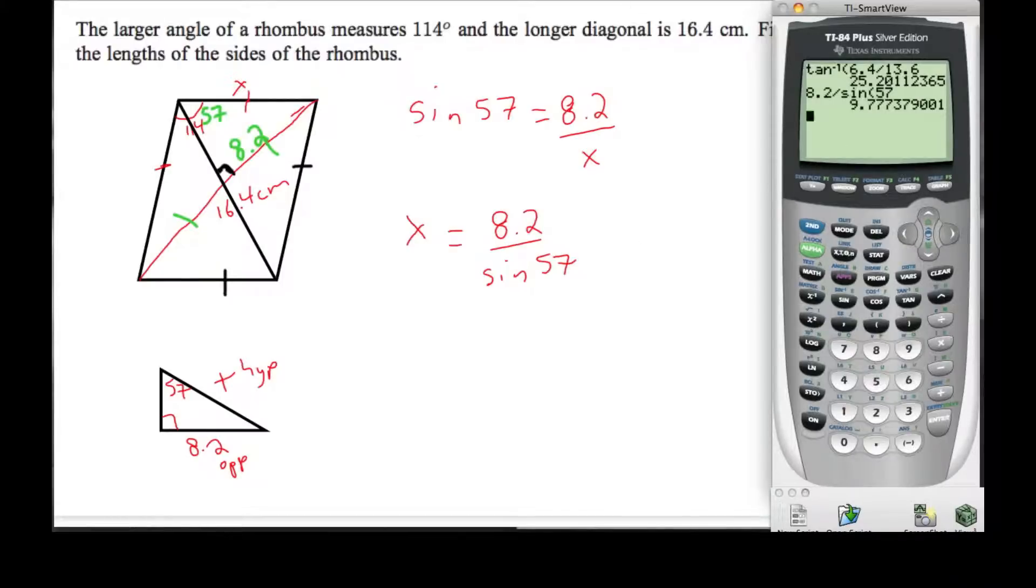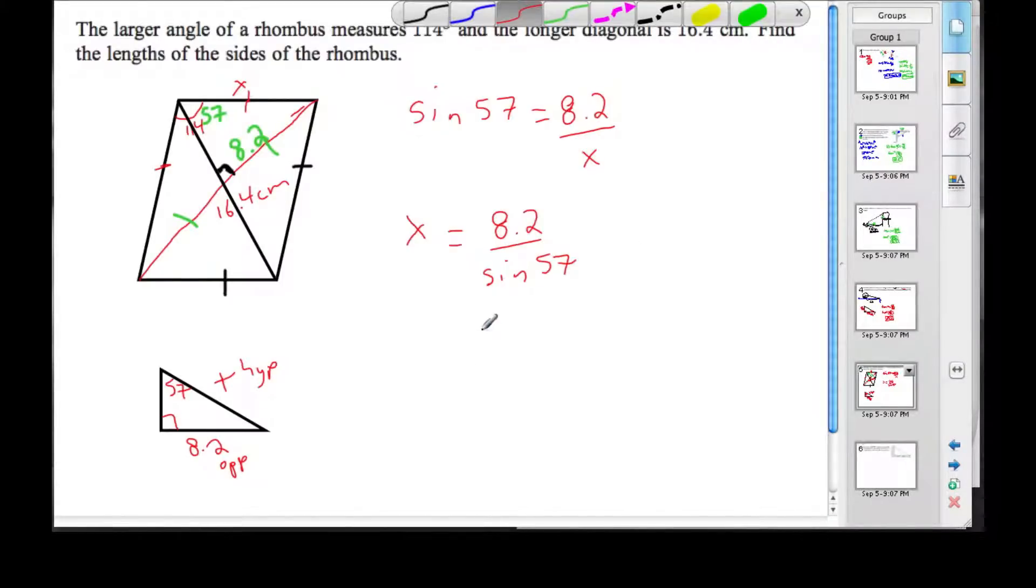Rounded to three significant figures, 9.78, because 7 makes that go up. So 9.78. Very important in the IB that we are also paying attention to units, and our units are centimeters. 9.78 centimeters.